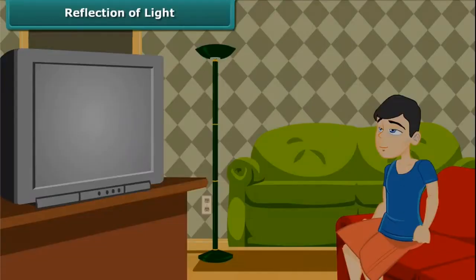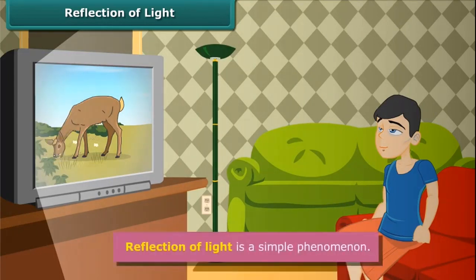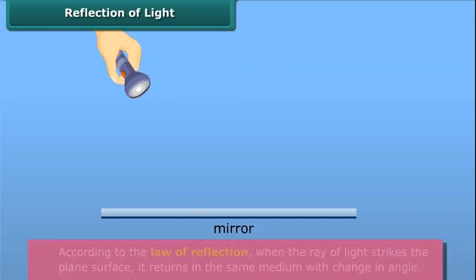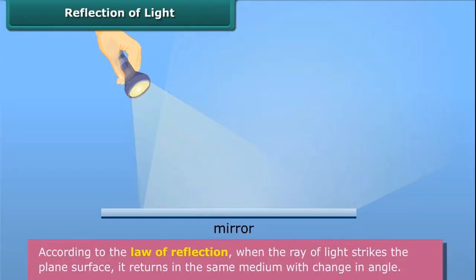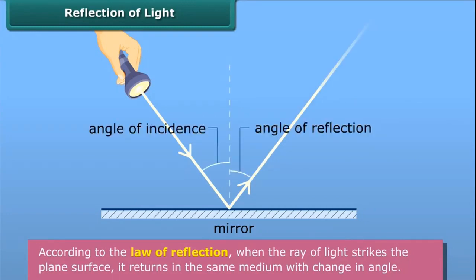Reflection of Light. Can you tell how do we see objects? We see objects when light reflected from them reaches our eyes. Reflection of light is a simple phenomenon. According to the law of reflection, when the ray of light strikes the plane's surface, it turns in the same medium with change in angle.